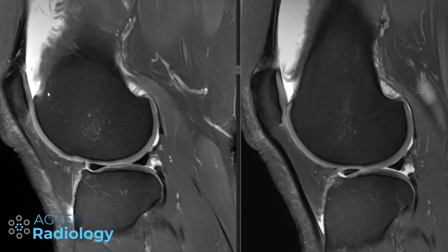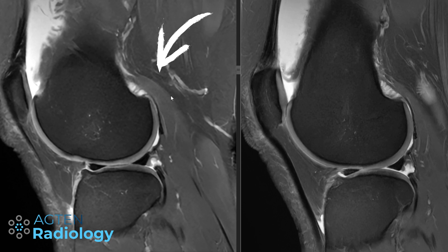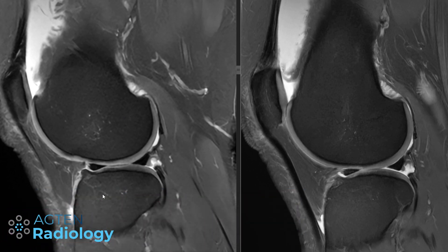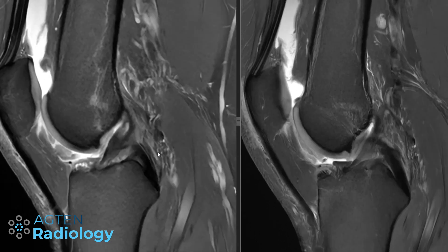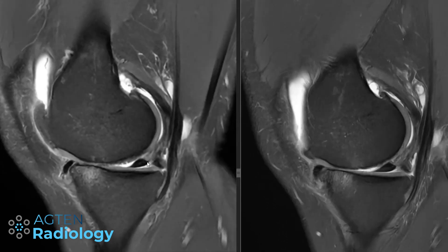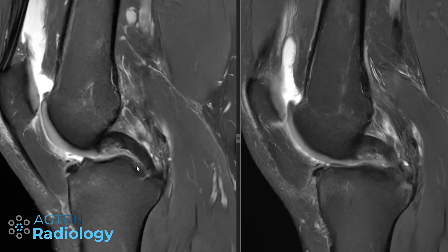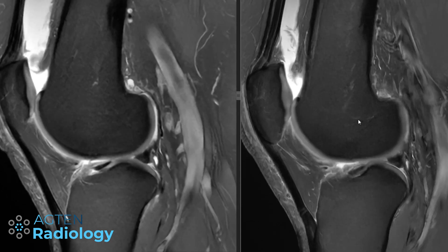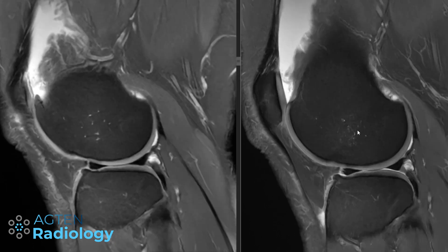It's actually this one. This sequence is part of our 5-minute knee MRI protocol that we use in emergencies or if we are running delayed in the program. You can see this is a fully diagnostic sequence — we can scan the knee in about 4 minutes and 45 seconds. This other one is the standard protocol which takes over 10 minutes to acquire.